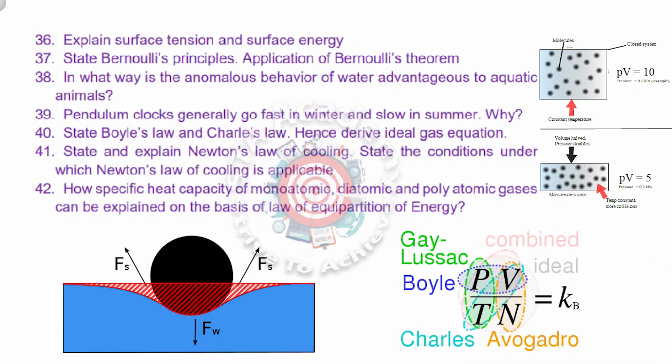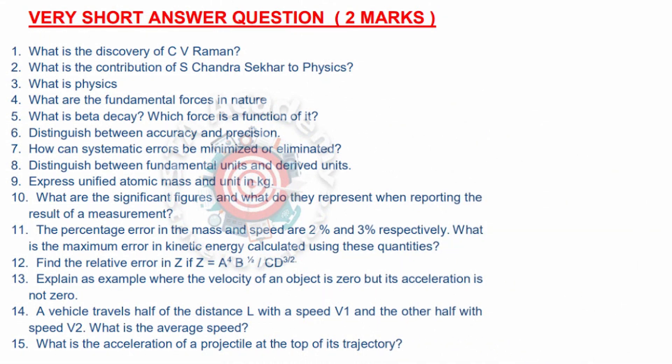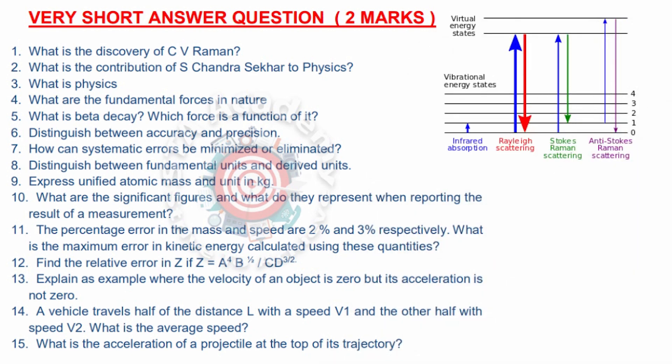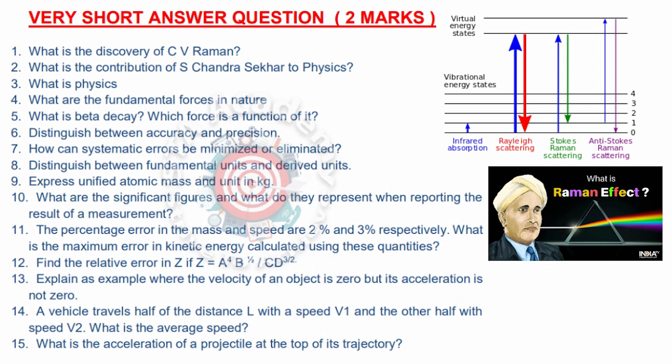Next is two marks question, that is VSAQs. Very important VSAQs I have given. I have given you 78 VSAQs. These are very important VSAQs. First is discovery of CV Raman. Second is contribution of S Chandrasekhar to physics. What is physics? Fundamental forces in nature. Fifth is what is beta decay. Sixth is distinguish between accuracy and precision. Seventh is how can systematic error be minimized or eliminated. Eighth is distinguish between fundamental unit and derived unit. Ninth one is very important numerical problem. Tenth is also very important. Eleventh is a numerical problem. Twelve is also a numerical. Thirteen: explain an example where the velocity of object is zero but its acceleration is not zero. Fourteen is also a very important problem for average speed. Fifteen: what is acceleration of projectile at the top of its trajectory. Sixteen is a numerical problem.